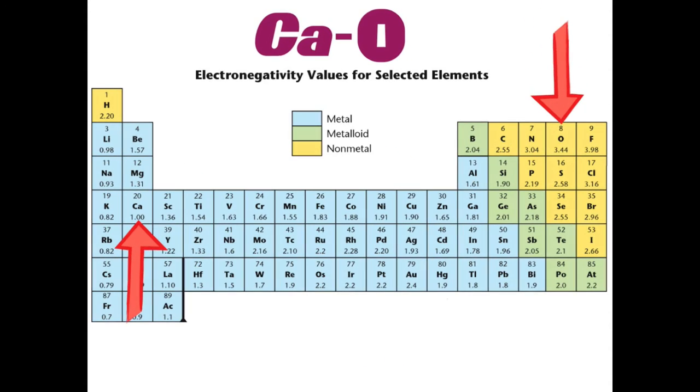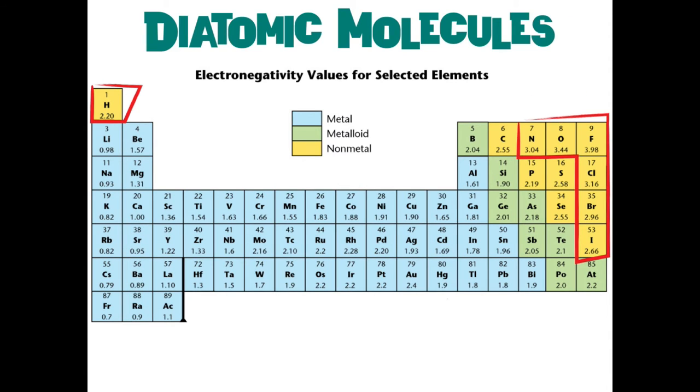That means the electrons that they share are going to spend most of their time on the oxygen side. So this is ionic. In fact, so much so that we say that they strip the electrons pretty much from the metals on the left side.